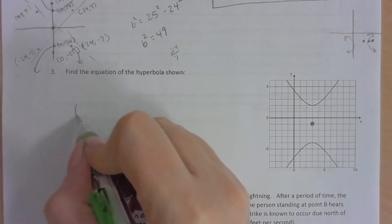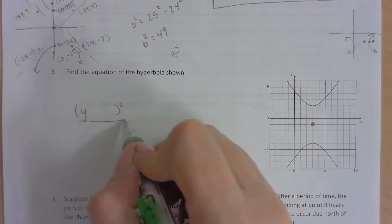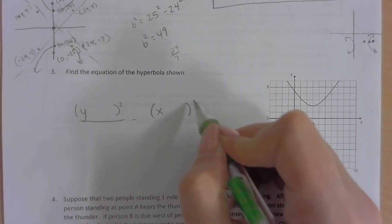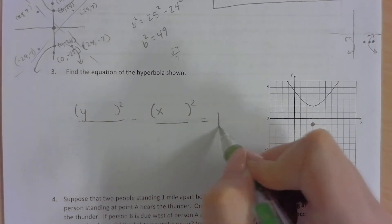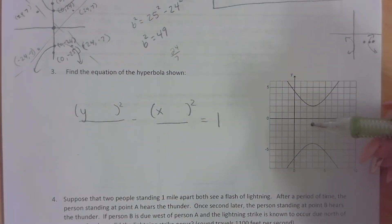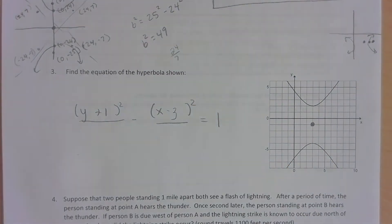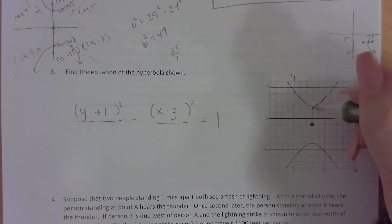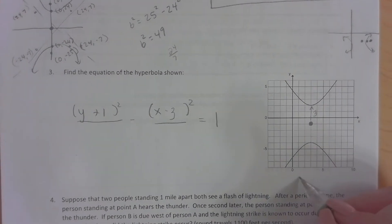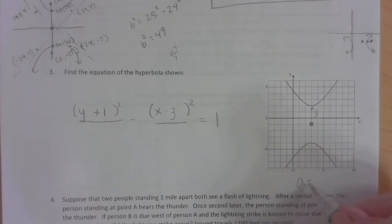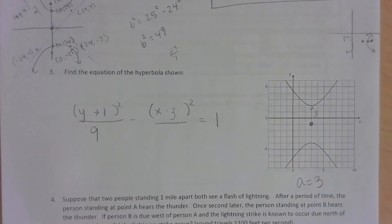Now, because it's opening up and down, the y is going to be first. So y minus negative 3, and then x minus negative 1. Now we know this distance here is 3, so we know a equals 3. So a always goes underneath the first one, so 9.